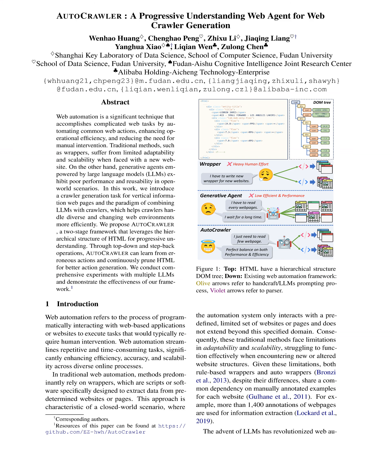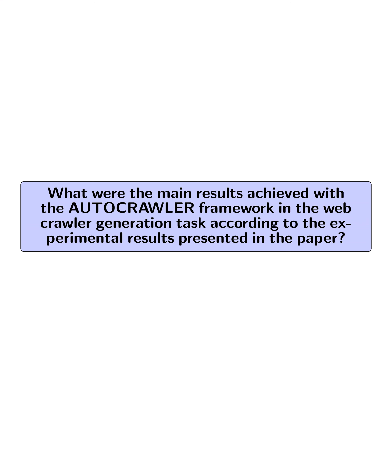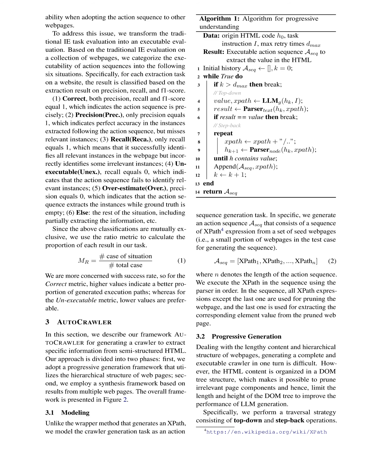The experimental results showcase the effectiveness of the AUTOCRAWLER framework in generating executable action sequences for web automation tasks. AUTOCRAWLER demonstrated superior performance in generating action sequences accurately aligned with extraction targets, compared to baselines like ZS-COT and Reflection when given the golden label of the instruction.